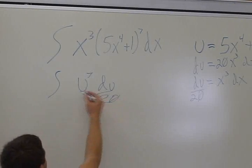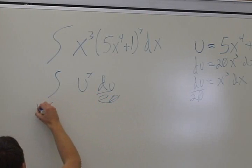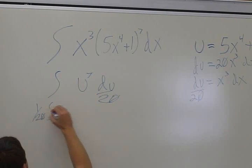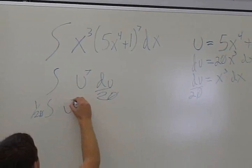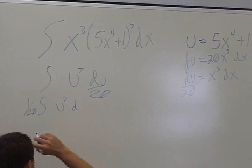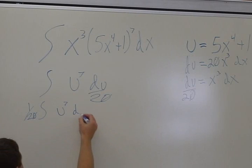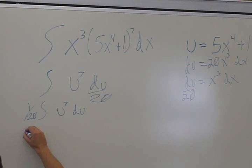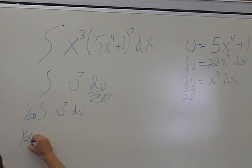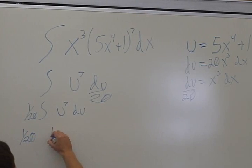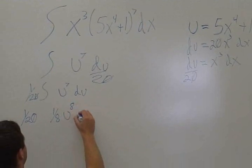We can pull 1/20 out to the front, so that's 1/20 times the integral of u⁷ du. Now we can integrate this, which gives us 1/20 times 1/8 u⁸.